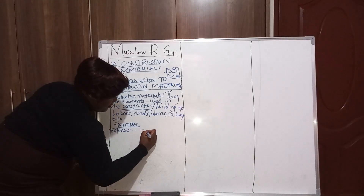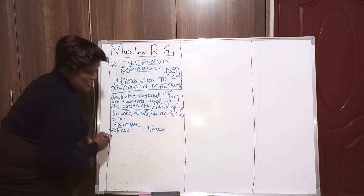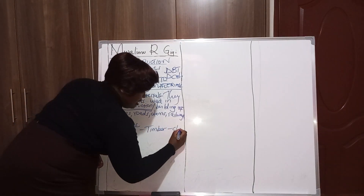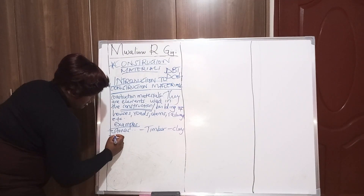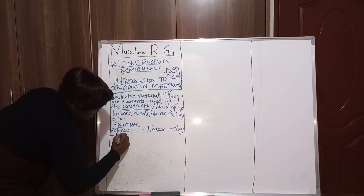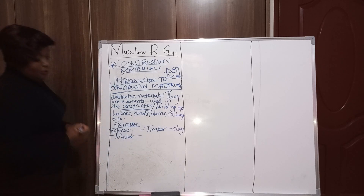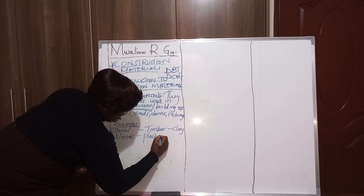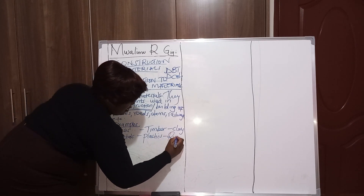We have timber. We have clay. We can also say metals. We can also add plastics. Rubber. All of these, they are construction materials.